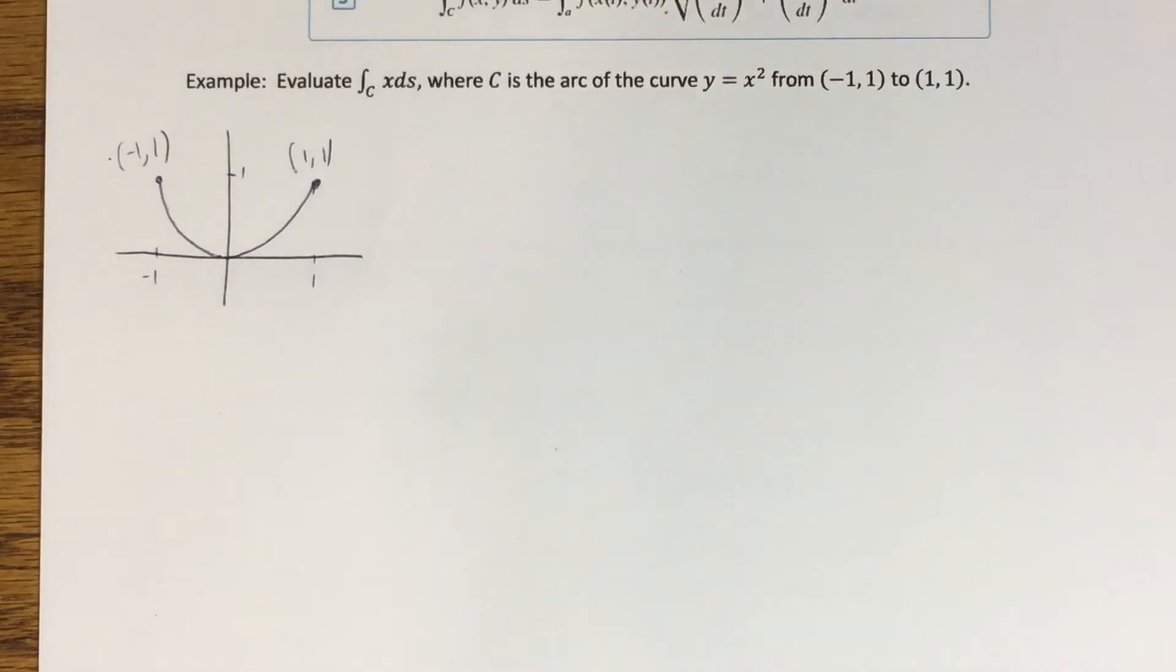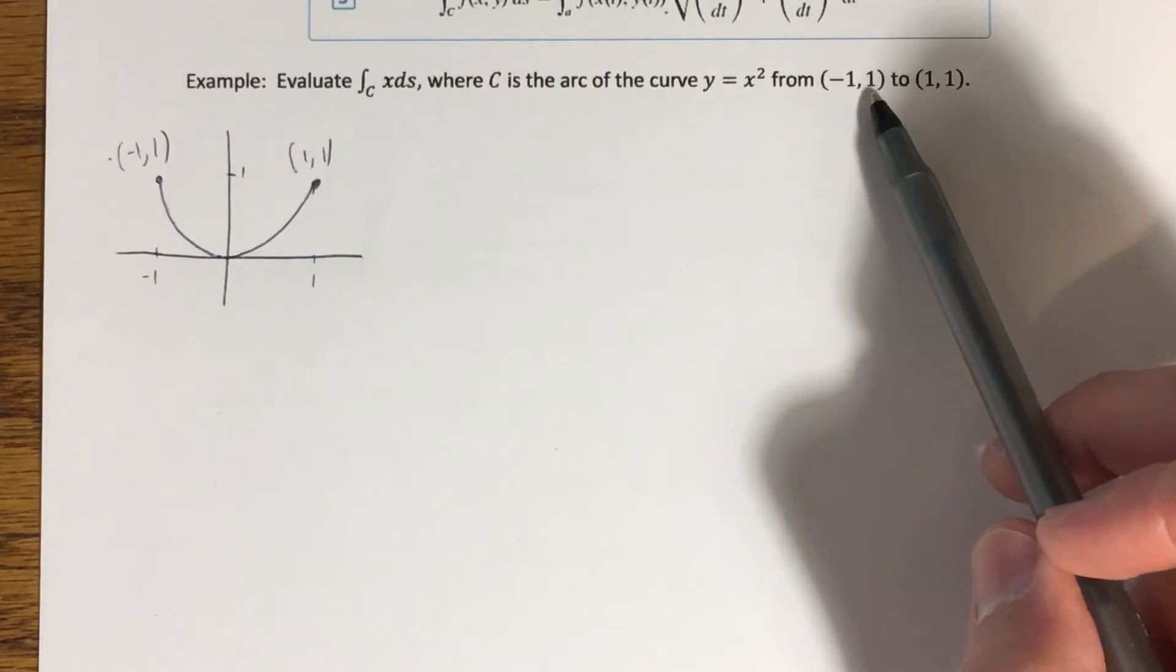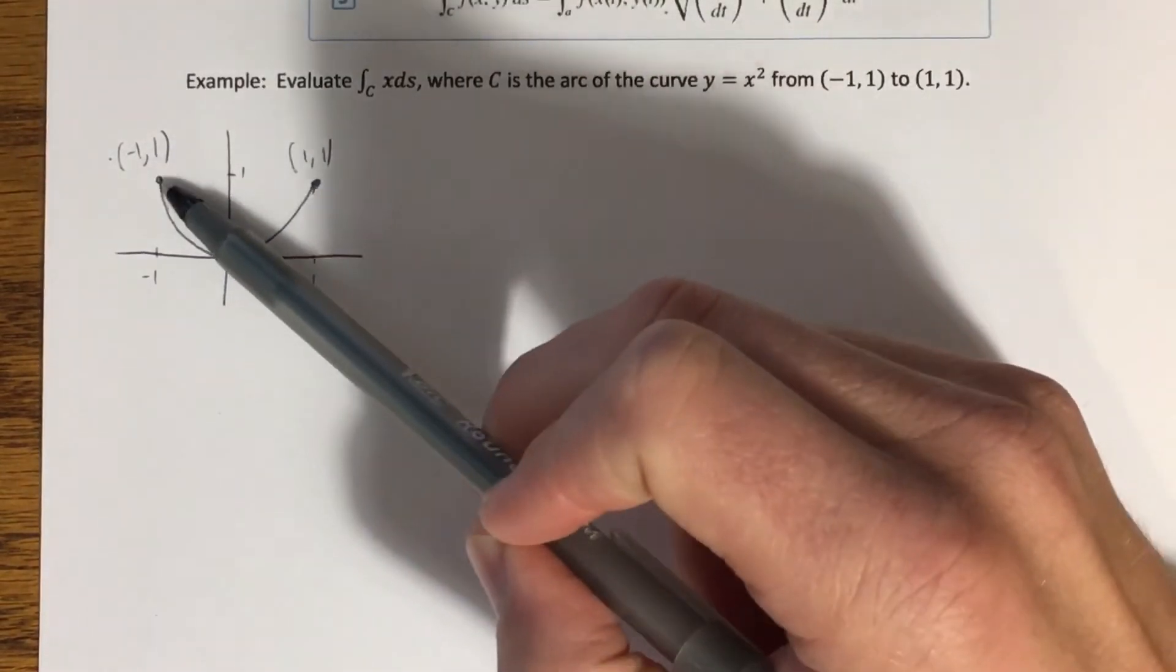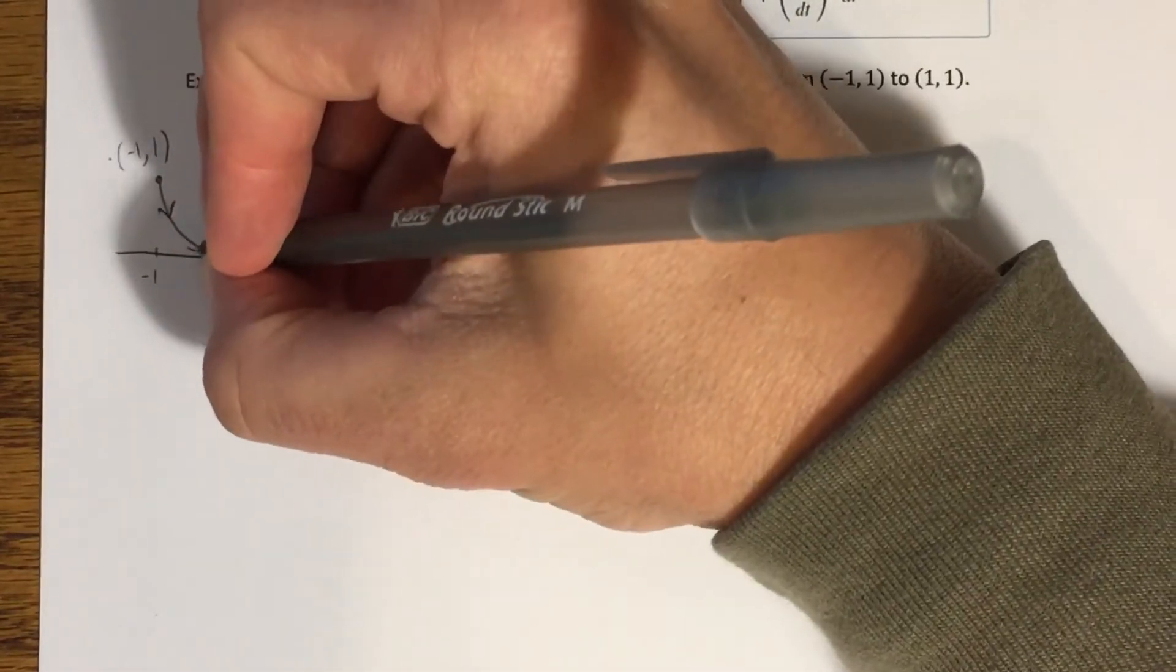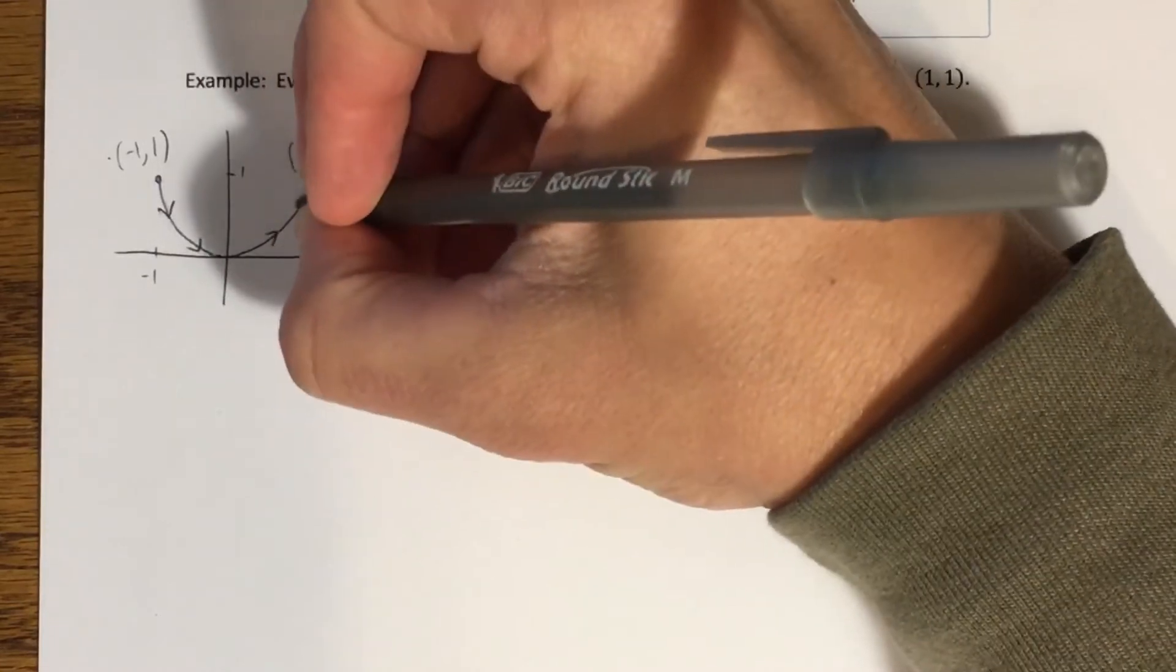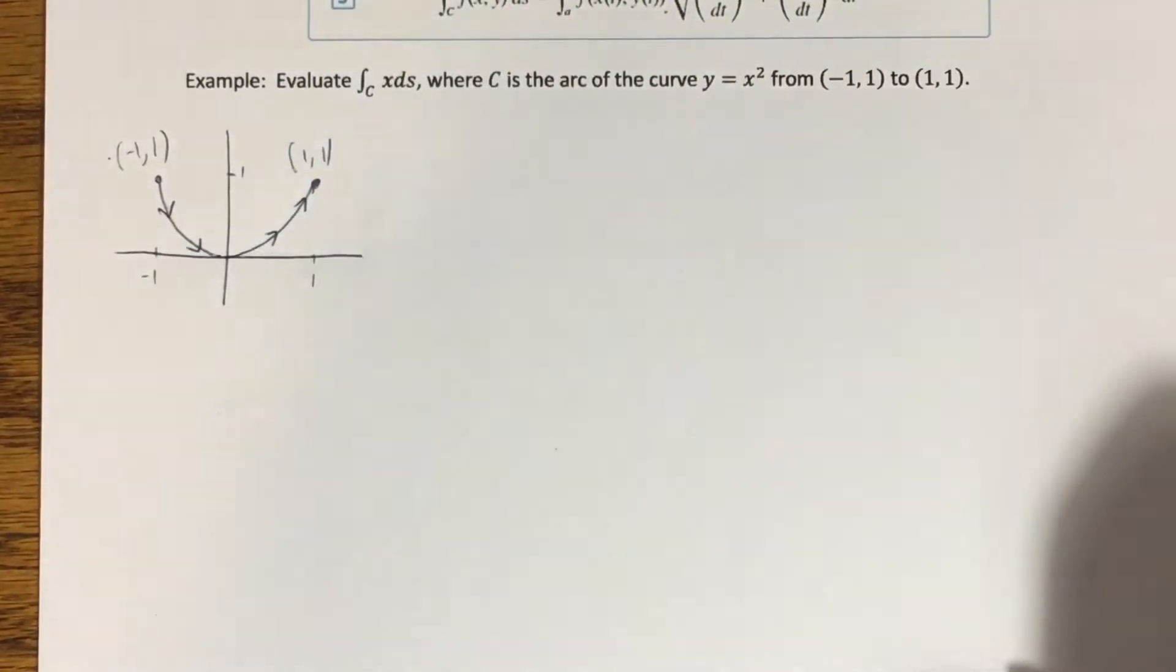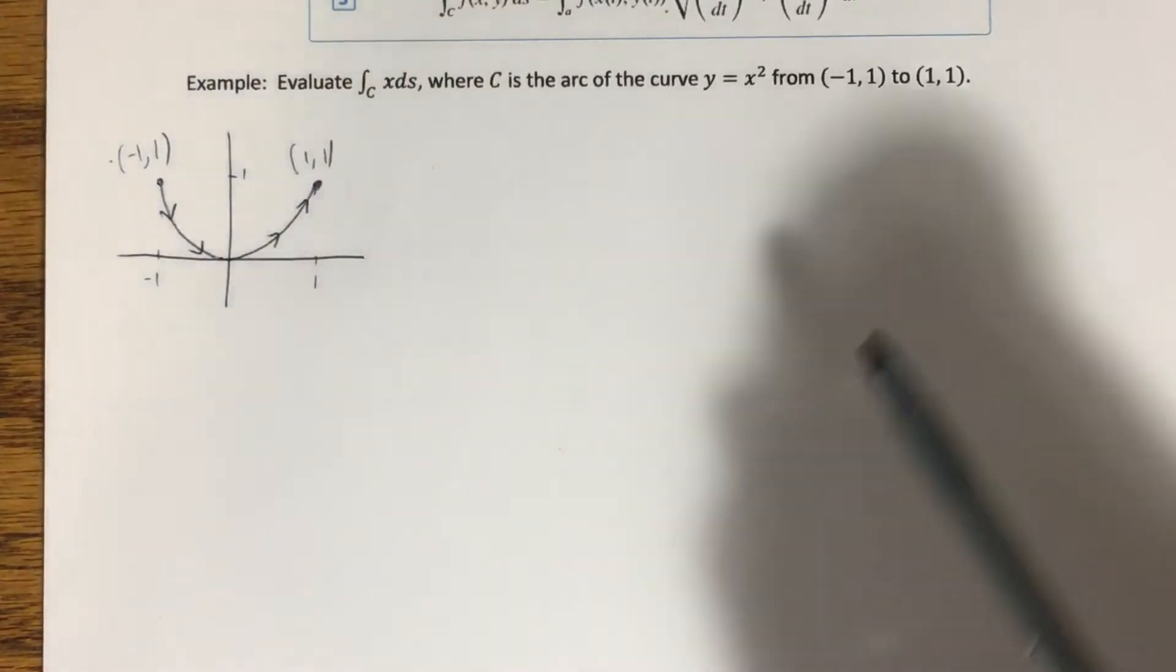Now, one thing that's going to be really important, it's not going to really play into how we evaluate this integral so much, or kind of, but it's going to be much more important a little bit later, is the orientation of a parametrized curve. So notice the order that these are listed in from negative 1, 1 to 1, 1, indicating that negative 1, 1 is an initial point, 1, 1 is a terminal point. That gives an orientation to this curve in the sense that we're starting here, traveling along the curve, and ending here. That orientation is really, really important in some of the things that come up later.